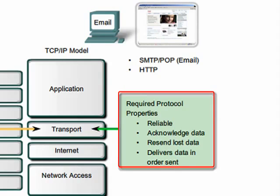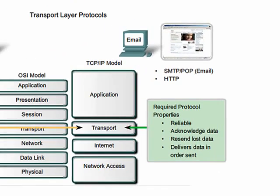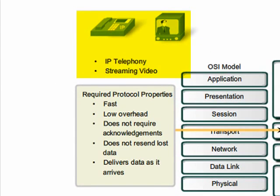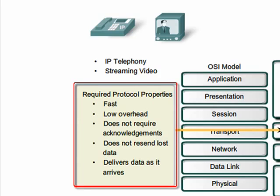Therefore, these applications must use a transport layer protocol that is reliable, as is TCP. Other applications, such as IP telephony and streaming video, are more tolerant of the loss of small amounts of data. For example, if one or two segments of a video stream failed to arrive, it would only create a momentary disruption in the stream. This may appear as a distortion in the image, but may not even be noticeable to the user. These applications must use a transport layer protocol that has low overhead and is fast, as is UDP.